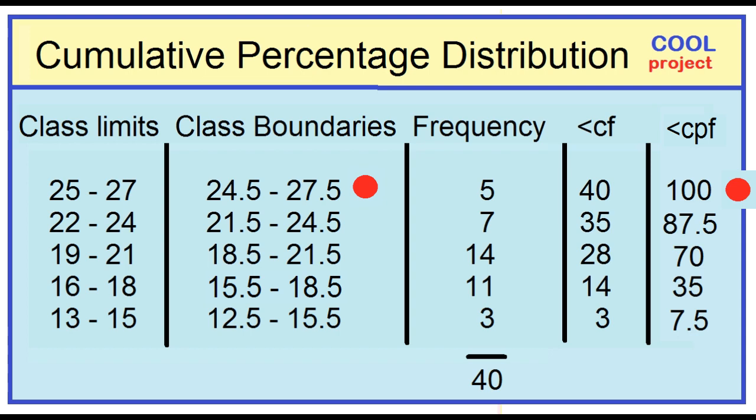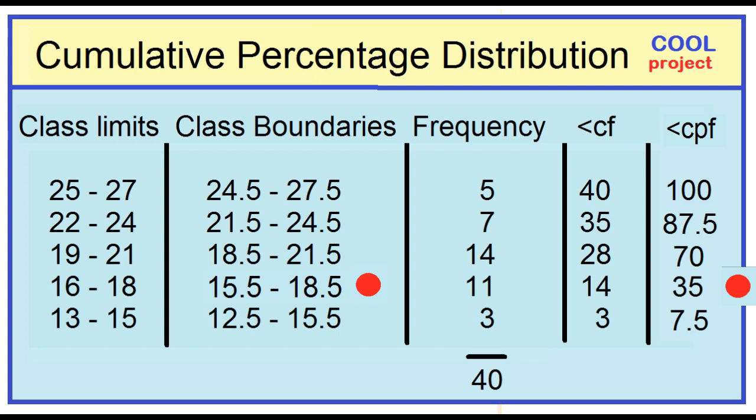The table shows that 100 percent of the women each had a boyfriend when they were less than 27.5 years of age. 87.5 percent had a boyfriend when they were less than 24.5 years of age. 70 percent when they were less than 21.5 years of age. 35 percent when they were less than 18.5 years of age, and 7.5 percent when they were less than 15.5 years of age.